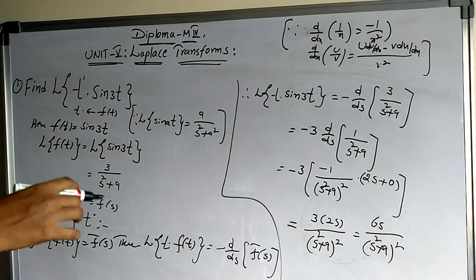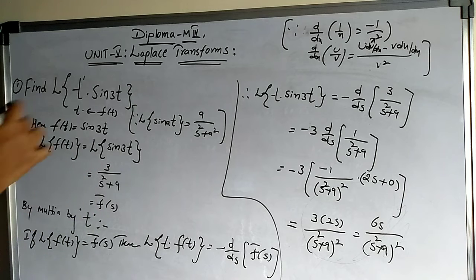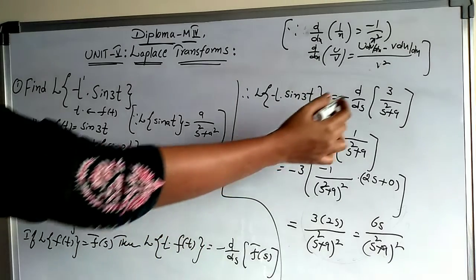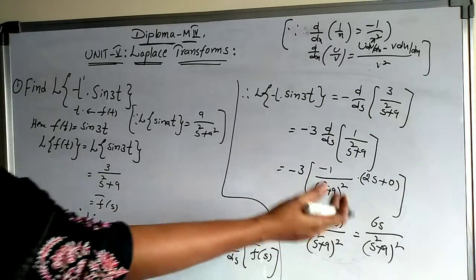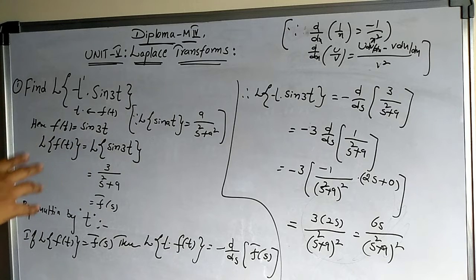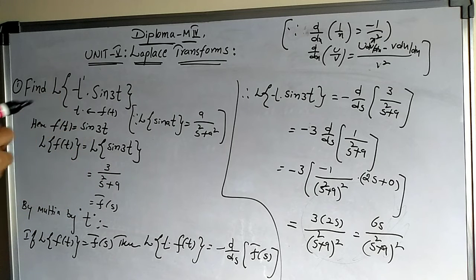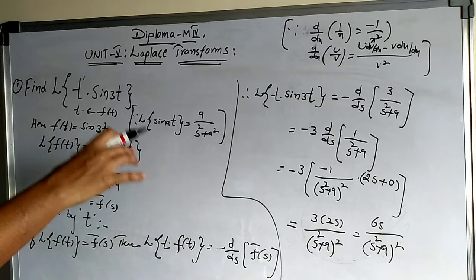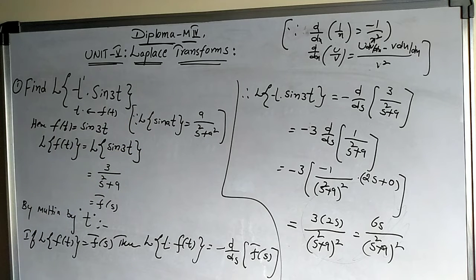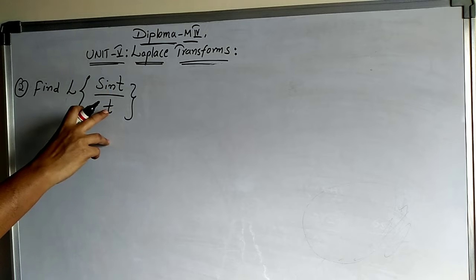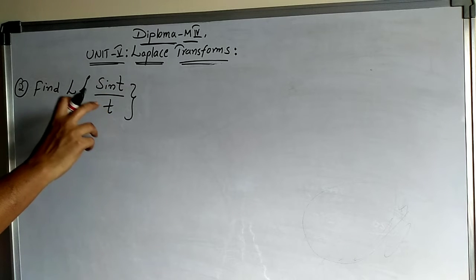This is the process to apply the multiplication by t property. When t is multiplied, apply 1-time derivation. If t² is multiplied, apply 2-time derivation. t³ gives 3-time derivation, and so on. Problems typically involve t, t², or t³. Next, let's look at the division by t example: find the Laplace of sin t / t.